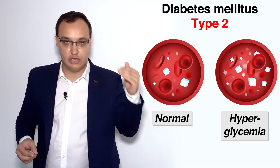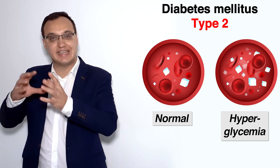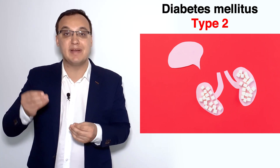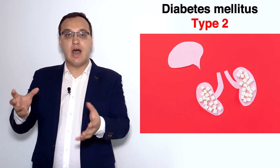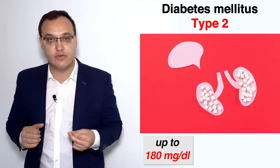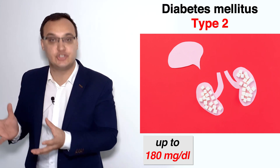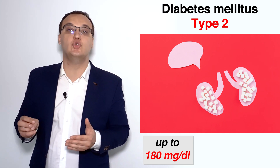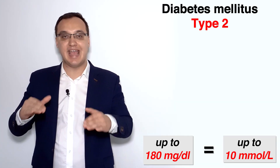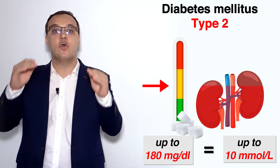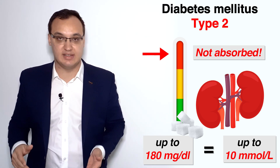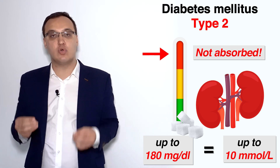We have a high level of glucose in the blood, and this reaches the kidneys. The kidneys secrete and absorb substances, including glucose. The kidney absorbs glucose up to a certain threshold: up to 180 milligrams per deciliter, or equivalently up to 10 millimoles per liter. Everything above 180 mg/dL or above 10 mmol/L is not absorbed — it is excreted because the kidneys' capacity cannot absorb more glucose.